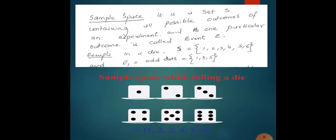Next is sample space. Sample space is a set — we call it S — containing all the possible outcomes of an experiment. A particular outcome is called the event, and all the outcomes together form the sample space. For example, in a rolling die, the sample space will be all outcomes: one, two, three, four, five, and six. An event would be, for example, all odd dots: one, three, and five.